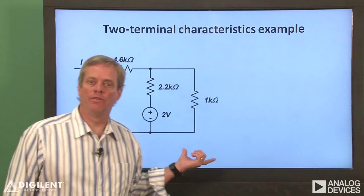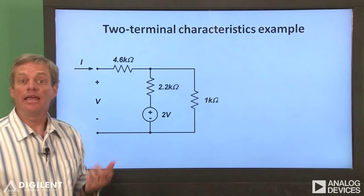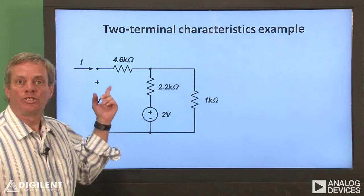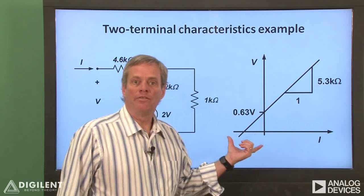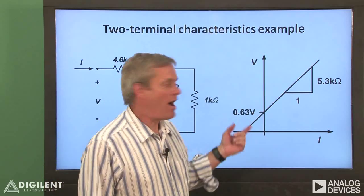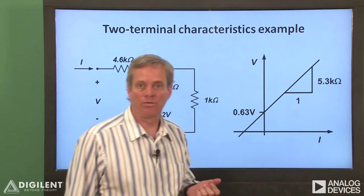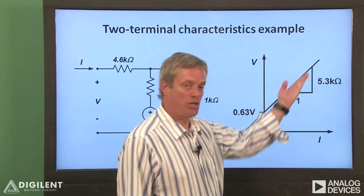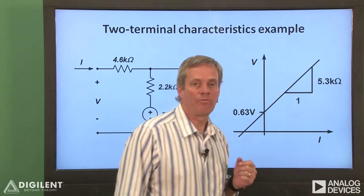This is the circuit that we used in our video on voltage-current relationships for two terminal networks. In that video, we measured the voltage-current relationship for the circuit and plotted it. We found that the open circuit voltage, the y-intercept of the plot of voltage versus current, was about 0.63 volts. We also determined that the equivalent resistance, the slope of the voltage-current relationship, was approximately 5.3 kilohms.